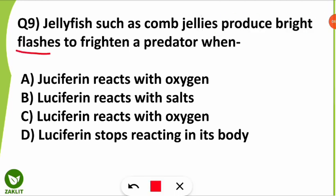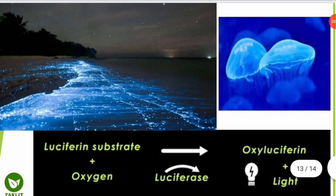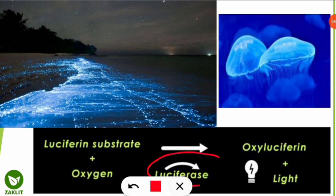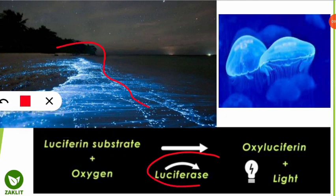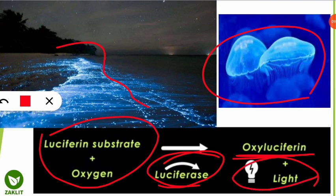The ninth question was: jellyfish such as comb jellyfish produce bright flashes of light to frighten their predators — which reaction causes this? The correct option is option C. When the luciferin chemical reacts with oxygen, the enzyme luciferase produces oxy-luciferin and generates light. Bioluminescent organisms — including jellyfish, algae, phytoplanktons, and fireflies — all use this luciferin-oxygen reaction to produce light.